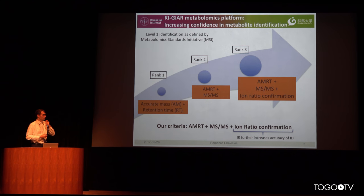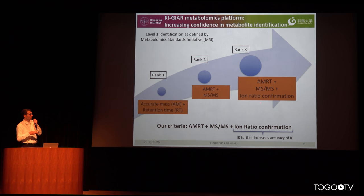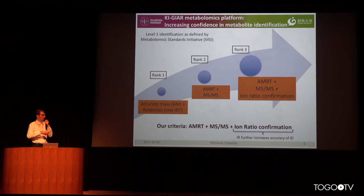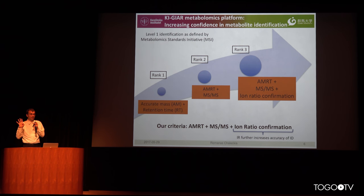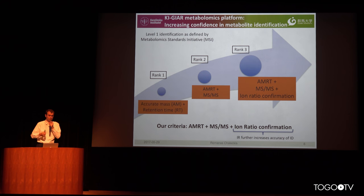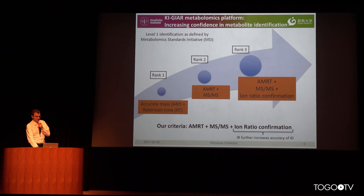At our highest level of identification we also add the ion ratio — how the intensities or peak areas of the MS/MS fragments compare. So we actually have four identification points for one metabolite, which is quite an improvement over what is currently used.